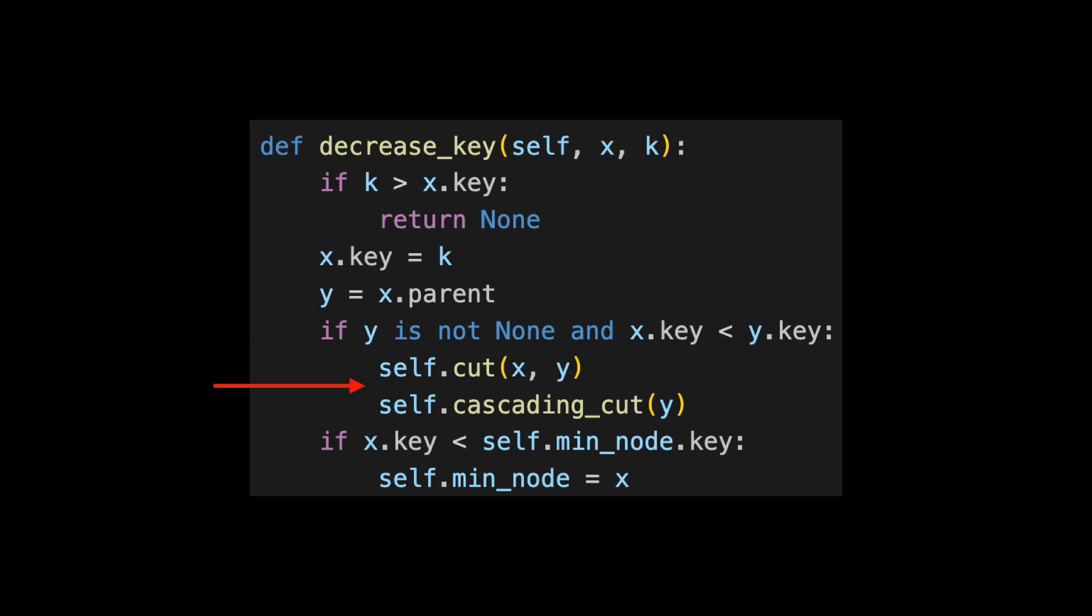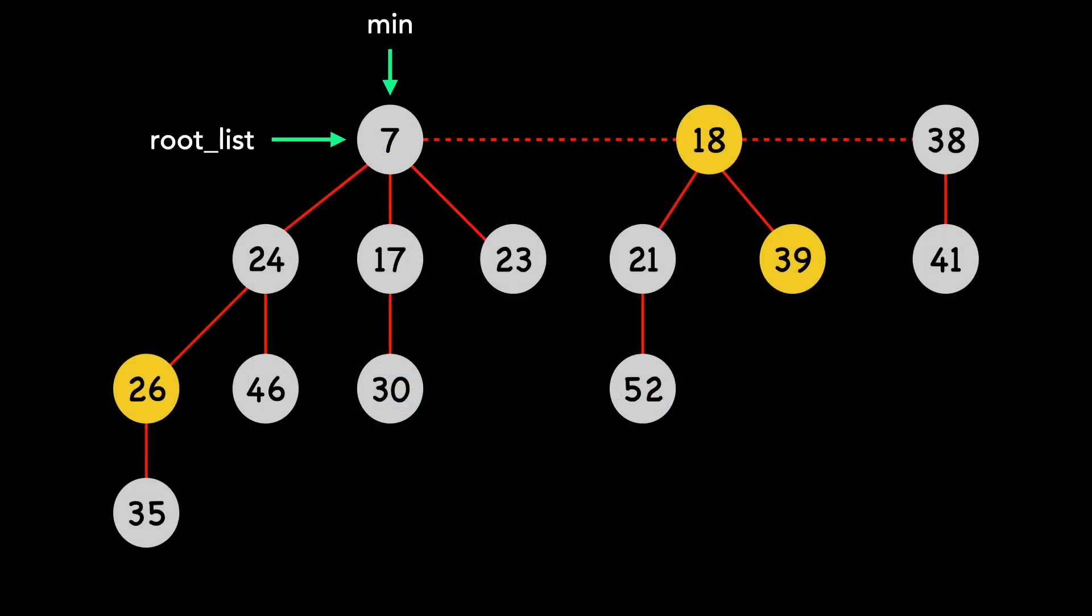Finally, we check if X's new key value is less than the current min, in which case we update the min pointer. Let's put this code to action on the following Fibonacci heap. Note that this is the same heap from the CLRS book, my main source. The book is linked in the description.